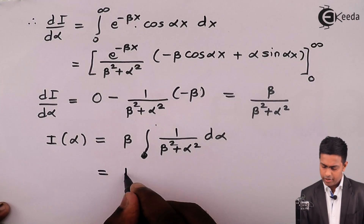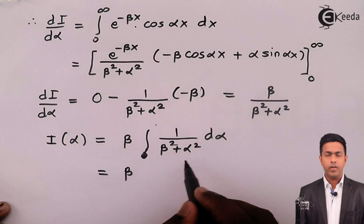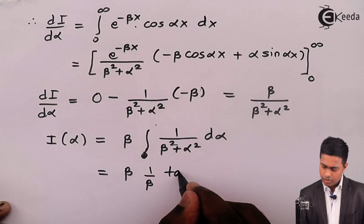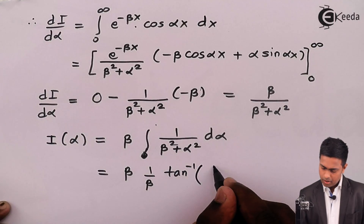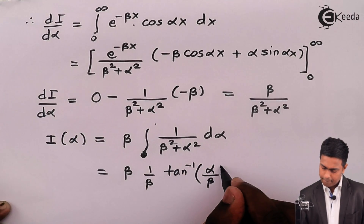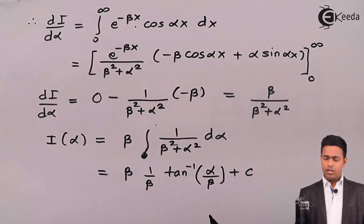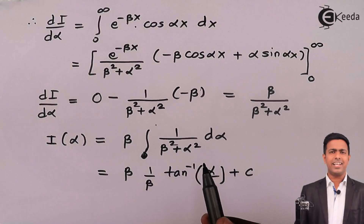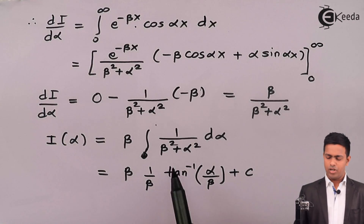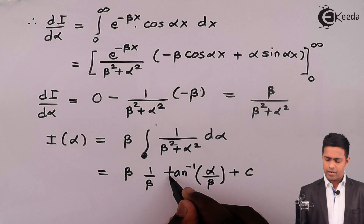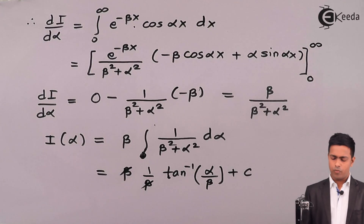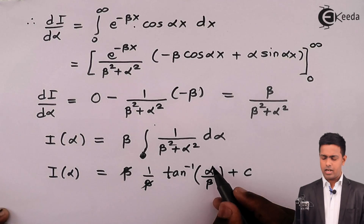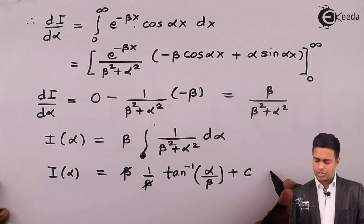After integrating both sides with respect to alpha, beta remains as is, and we get the integration as 1 by beta times tan inverse of alpha by beta plus C. Alpha is the variable of integration whereas beta is a constant, so we can use the formula of tan inverse. Beta and beta cancel, giving the value of I(alpha) as tan inverse(alpha by beta) plus C. This is equation number two.